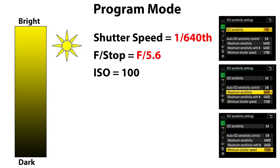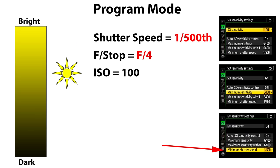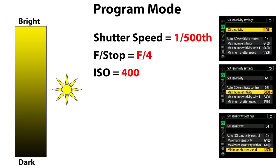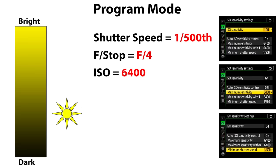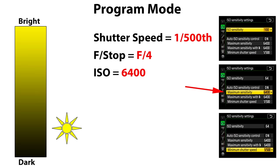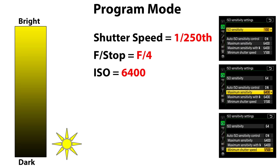Program mode works like a combination of the first two. It will use both f-stop and shutter speed to stay at or above the minimum shutter speed you requested in the ISO sensitivity menu, then turn to ISO once the lens is wide open and it's too dark to maintain your requested minimum shutter speed at your normal ISO. Once it hits your max ISO cap it will then drop the shutter speed to maintain a proper level of brightness, just like it did in aperture priority.